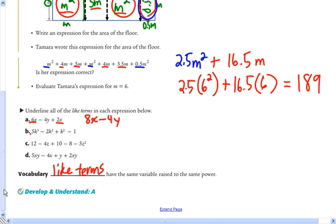The like terms in this one are minus 2k squared and plus k squared. If I combine those, I get the 5k to the third has to stay there. But you have a minus 2 plus 1 is a minus 1k squared. Minus 1. And this one, the like terms are all these constants. 12 plus 10 is 22. Minus 8 is 14. And then the 4z is not a like term with the minus 5b squared. So those we have to leave. And then the last one, the like terms are the 5xy and the 2xy, which makes 7xy minus 4x plus y.